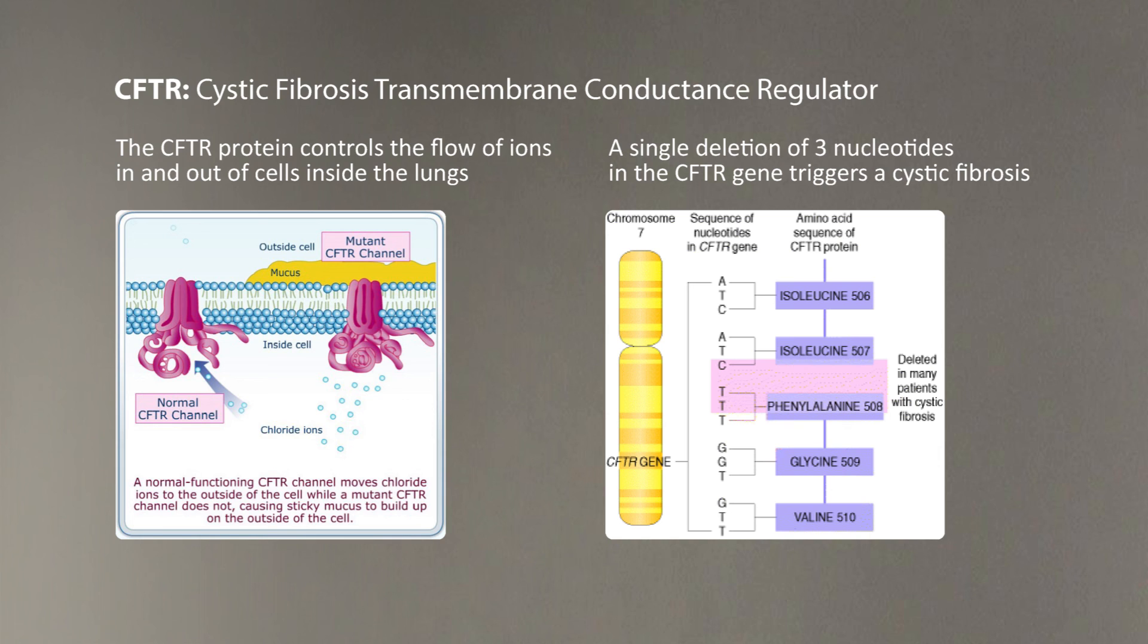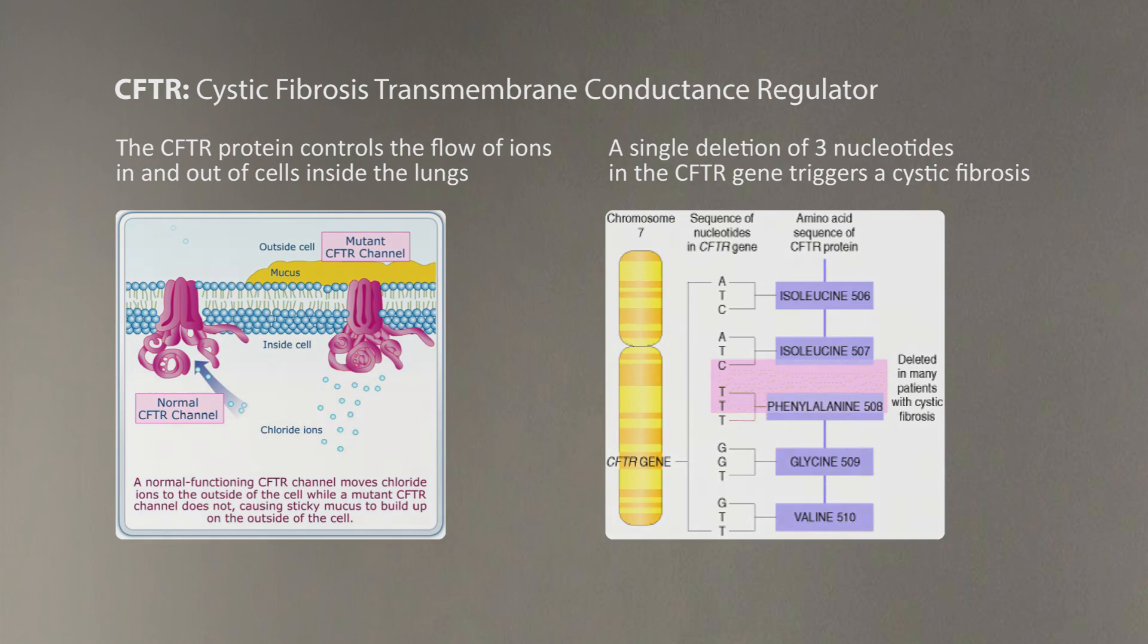And now the time has come for us to look at what algorithms biologists use to align adenylation domains, or to compare various candidate genes in the case of search for cystic fibrosis.